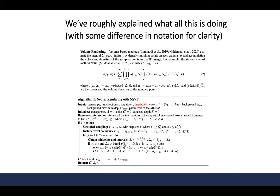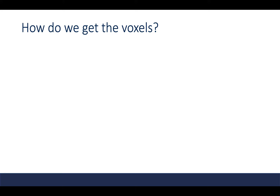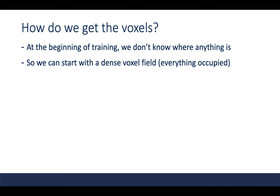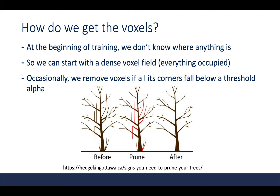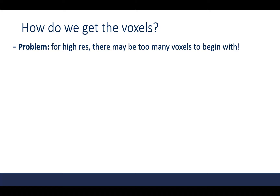That roughly covers Algorithm 1 and some of the equations in the paper. You might ask: how do we get the voxels in the first place? The issue is that we don't know where anything is at the beginning of training, so we'll just start with a dense voxel field. Occasionally we'll remove or prune a voxel if all of its corners fall below some threshold. The issue with this naive strategy is that for high resolution, you might begin with too many voxels.